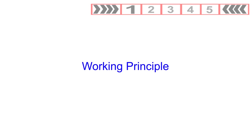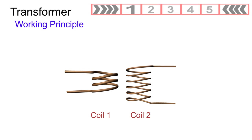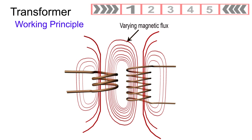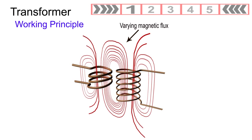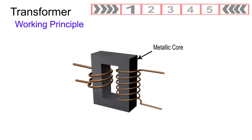Working principle of a transformer: The transformer is based on the principle that energy may be efficiently transferred by induction from one set of coils to another by means of a varying magnetic flux, provided that both sets of coils are on a common magnetic circuit.